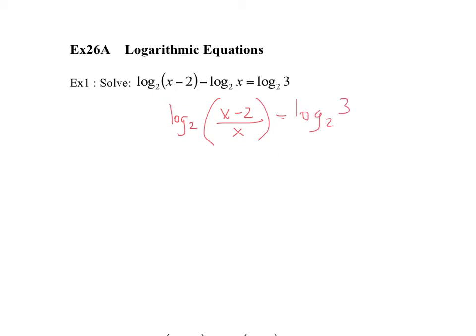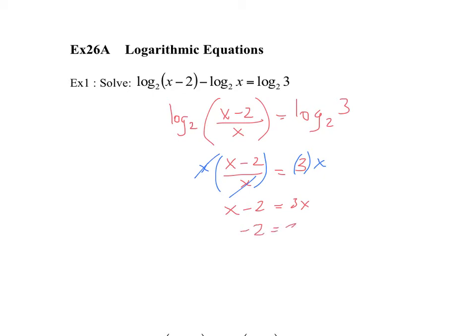Now both sides of the equation have log base 2. The argument on the left is (x minus 2) over x, and the argument on the right is 3. For this equation to be true, the arguments must be equal, so x minus 2 over x equals 3. Multiplying both sides by x gives x minus 2 equals 3x. Subtracting x from both sides gives minus 2 equals 2x, and dividing by 2 gives x equals negative 1.